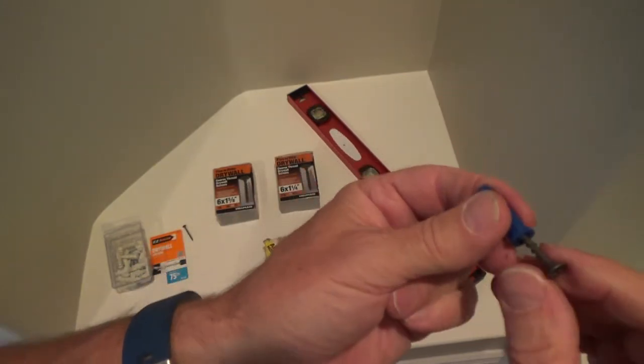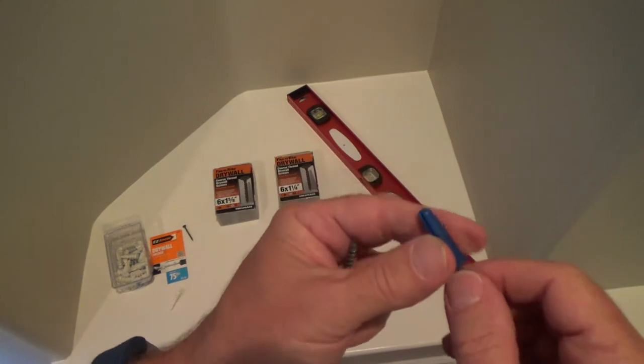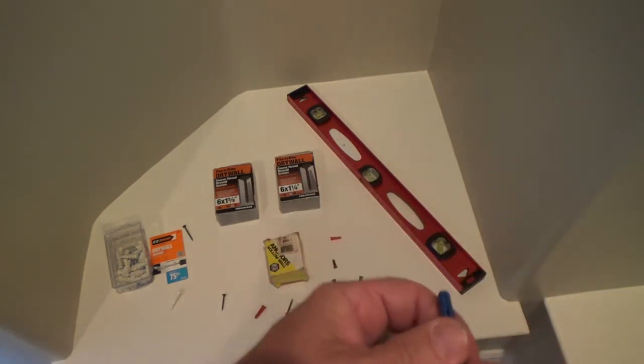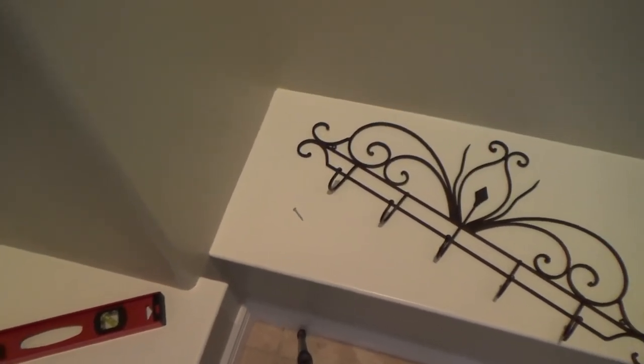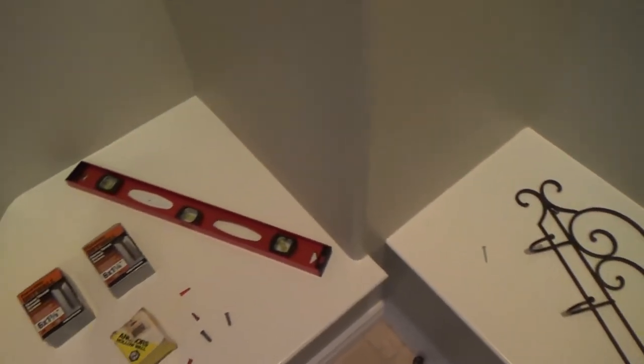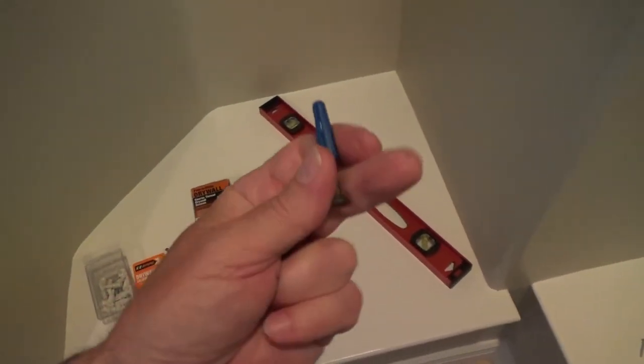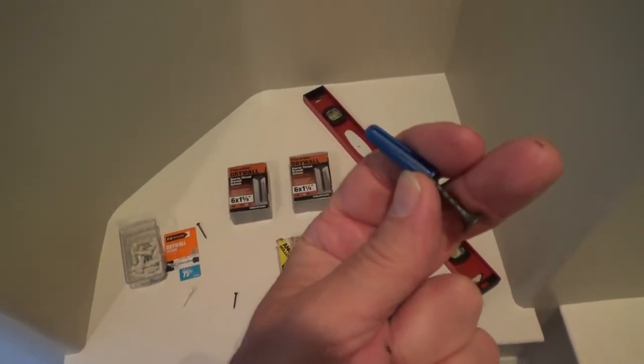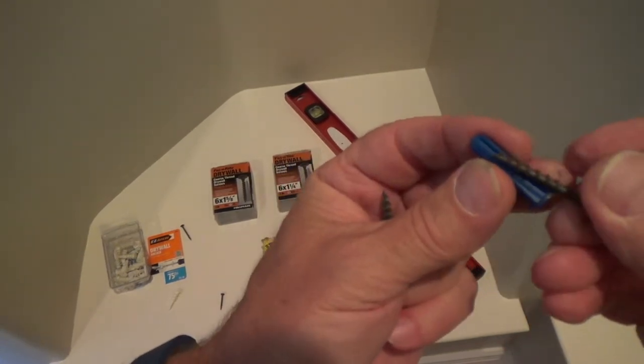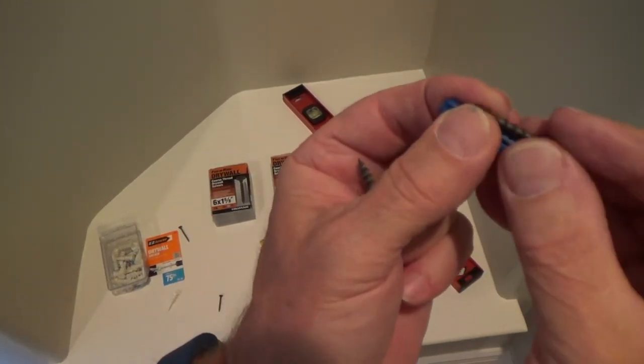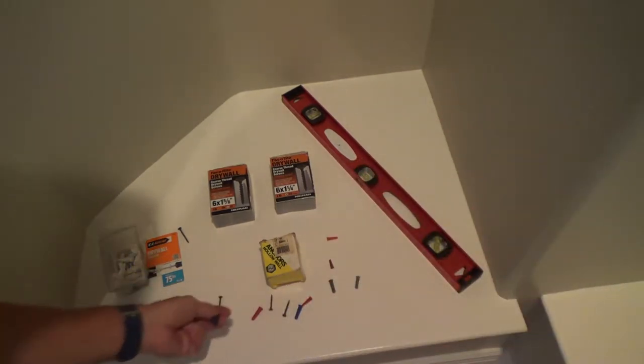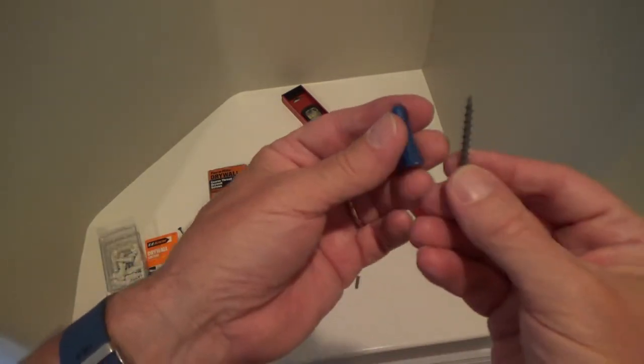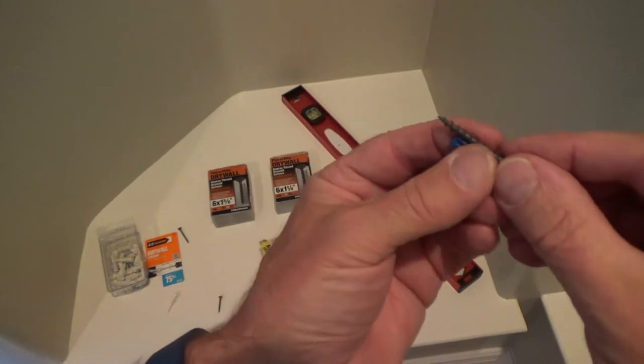But I would still feel confident putting that in there. We've got this coat rack, if we were to fill this up with 5 heavy coats and some other stuff, chances are this is not going to fall out of the wall. But I'm not going to use that inch and a quarter, I would use the inch and 5 eighths.